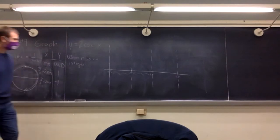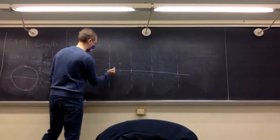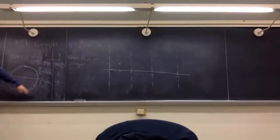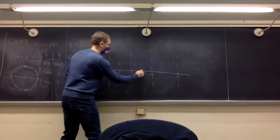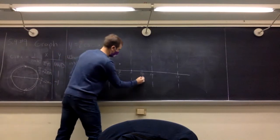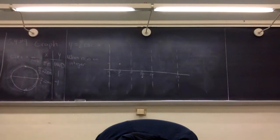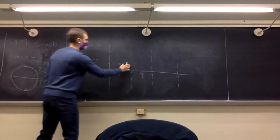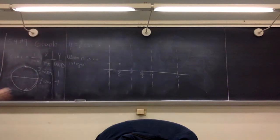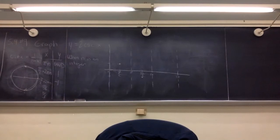We'll plot pi over two with a value of one, and three pi over two with a value of negative one. Let's also look at pi over six and pi over three. For pi over six, sine is one half, so cosecant is two. For pi over three, sine is root three over two, so cosecant is two over root three — that's less than two, about 1.15 after multiplying by 2.